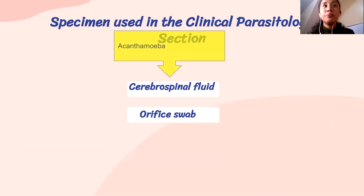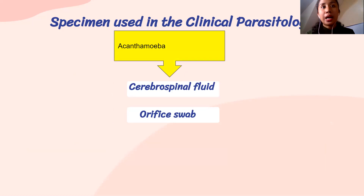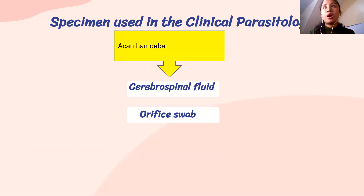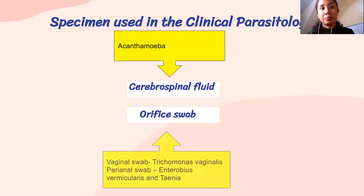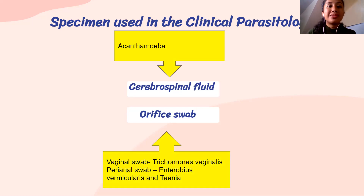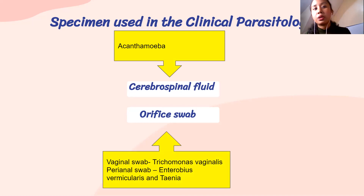Cerebrospinal fluid is used for Acanthamoeba, which targets the nervous system — especially in immunocompromised patients who swim in pools. We have orifice swabs: vaginal swab is used for Trichomonas vaginalis, and perianal swab is used for Enterobius vermicularis.